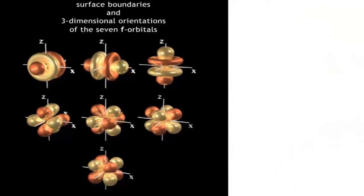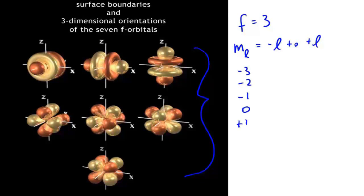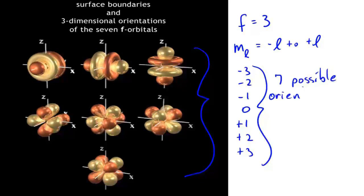Let's look at the surface boundaries and three-dimensional orientations of the seven f orbitals. For the f subshell, l equals 3. Therefore m sub l ranges from negative 3 to positive 3, giving values: negative 3, negative 2, negative 1, 0, positive 1, positive 2, and positive 3 — seven possible orientations in three-dimensional space. That's exactly how many f orbitals there are at any quantum level that allows f orbitals to exist.